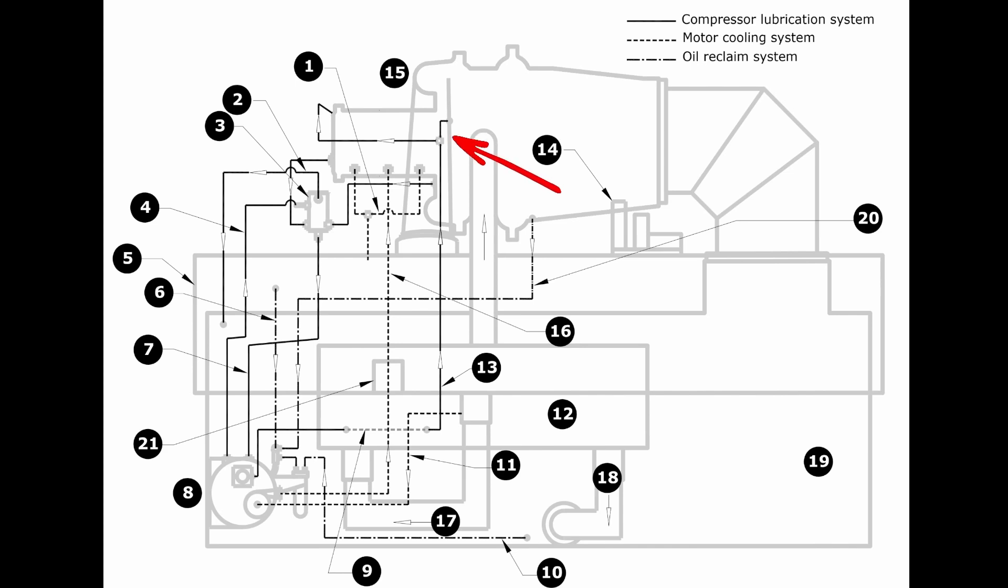We drain down out of those bearings. Our journal bearing has a drain port on the very front here which comes into our oil separator. Our thrust bearings have a drain port on the back of the cap which will come into this same oil separator as well.